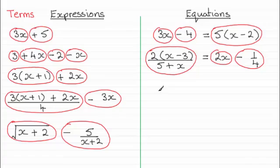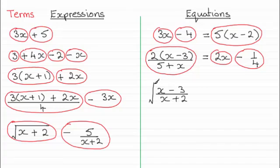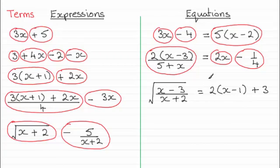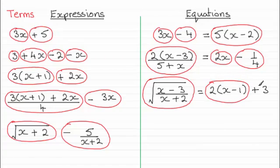Let's look at another one. Let's say we've got x minus 3 all divided by x plus 2 — we've seen that a fraction creates one term. And that's true even if I now put a square root round it; I've still got one term. And let's say it equals 2 lots of all of x minus 1 plus 3. Then in this equation I've got 3 terms: the term at the front on the left hand side, this term here, and this term here, plus 3.